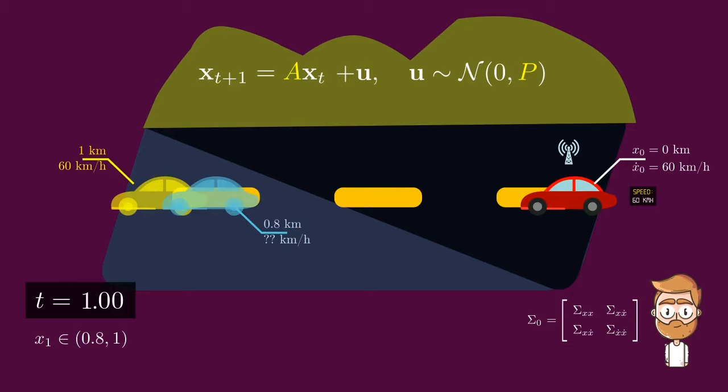you would say that the true position of the car is probably between the 0.8 and 1 km mark. And as a consequence, the speed of the car should probably be lower than 60 km per hour. But how much less than 60 km per hour exactly? And where exactly in the interval 0.8 to 1 would you say the car's position is right now?